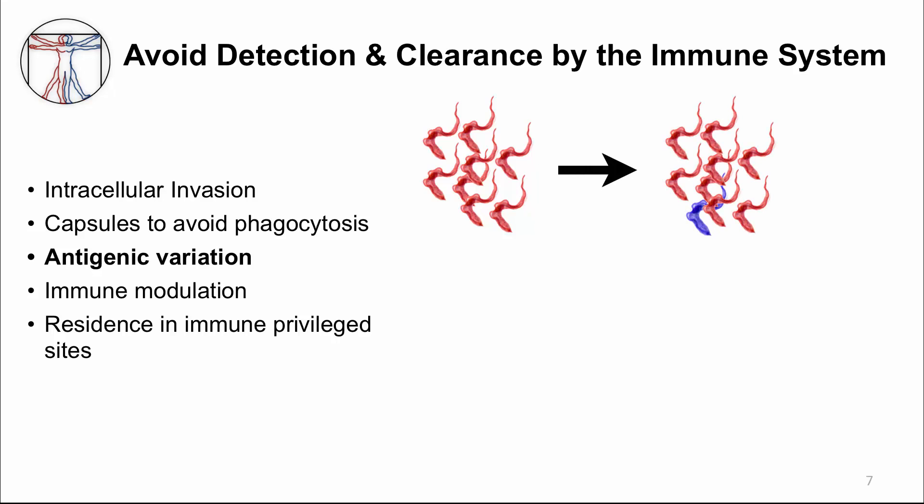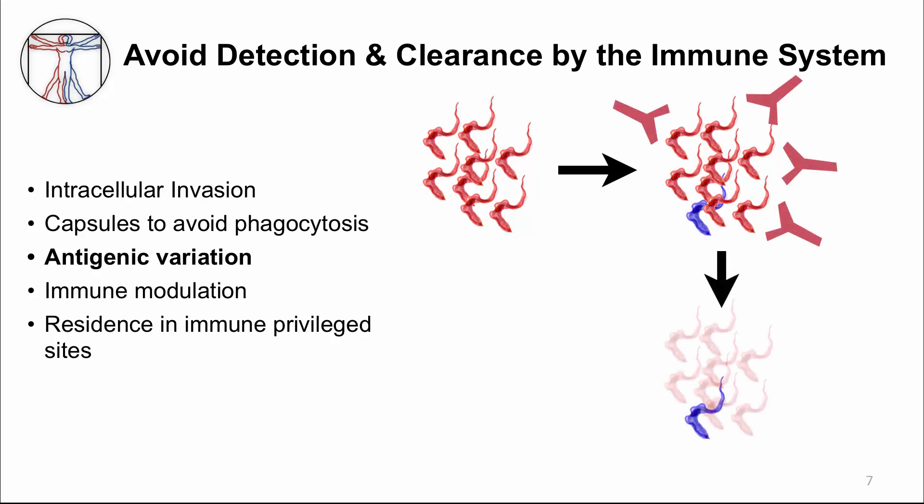One way that trypanosomes persist is to change their surface proteins by random shuffling of the genes that encode the proteins. The blue trypanosome has a different surface protein and can't be detected by the antibodies produced against the red trypanosome. Because of this, the blue trypanosomes are not cleared and continue to grow until new antibodies against blue trypanosomes clear them.